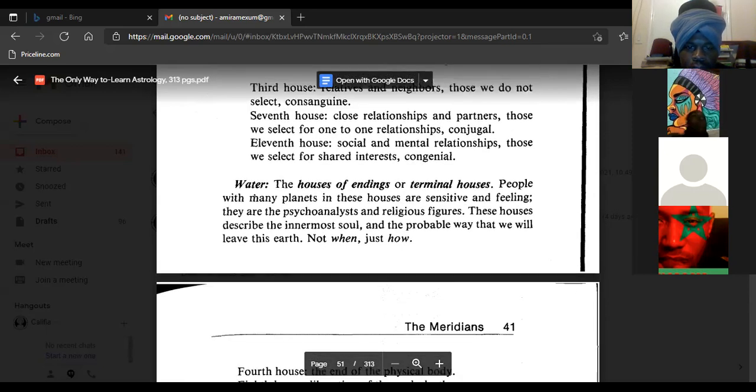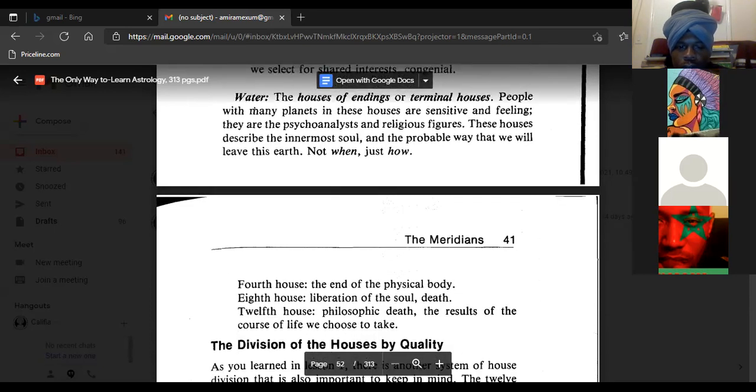Water, the houses of endings or terminal houses. People with many planets in these houses are sensitive and feeling. They are the psychoanalysts and religious figures. These houses describe the innermost soul and the probable way that they will leave this earth, not when, just how. Fourth house: the end of the physical body. Eighth house: liberation of the soul, death. Twelfth house: philosophic death, the results of the course of life we choose to take.